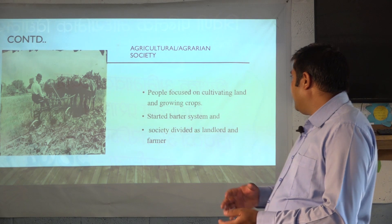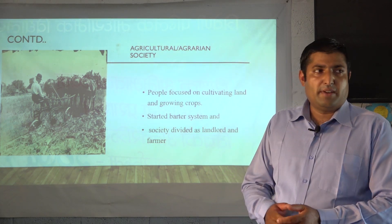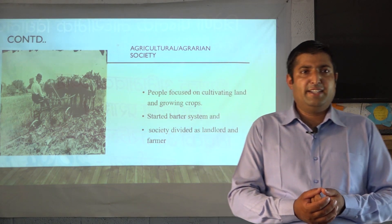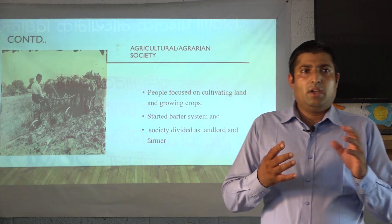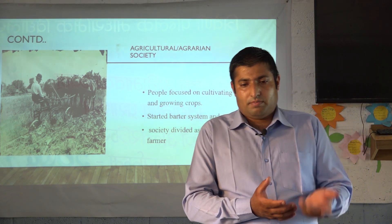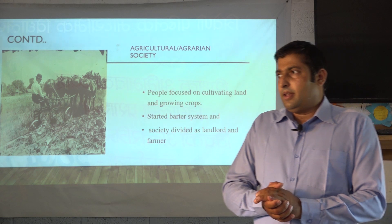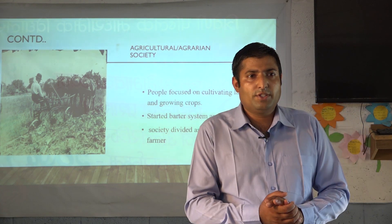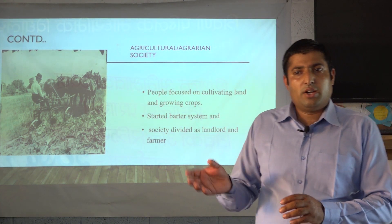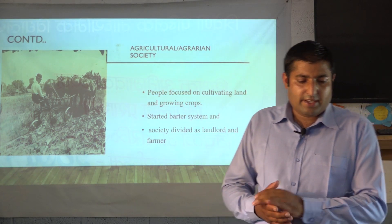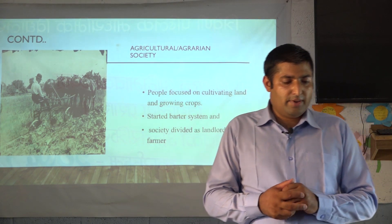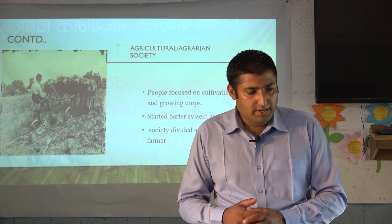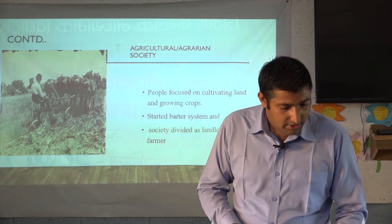Society was divided into landlords and farmers. Those who had large areas of land and could produce large quantities of crops became landlords, while those who worked the land were considered farmers. So the society developed and divided in the form of landlords and farmers — these are the main characteristics of agricultural society.